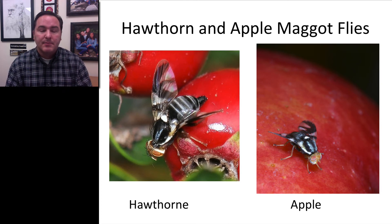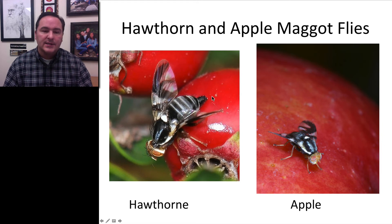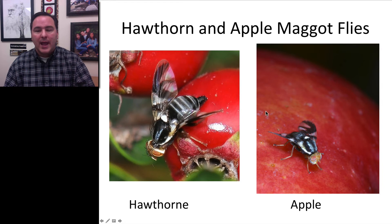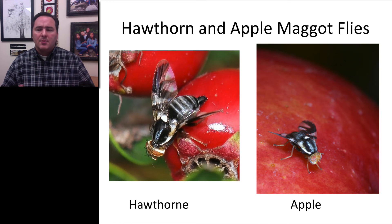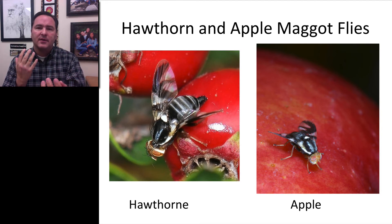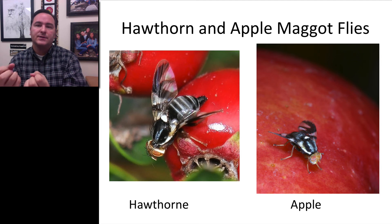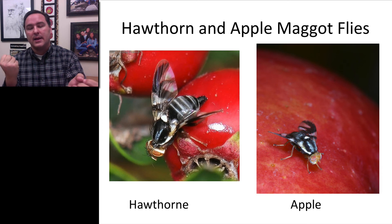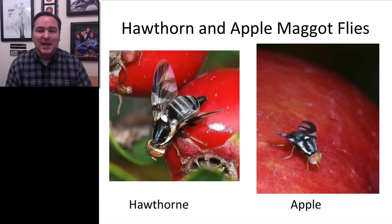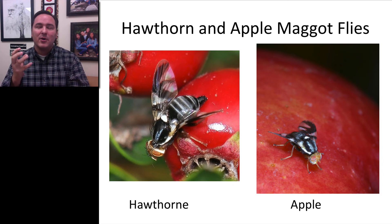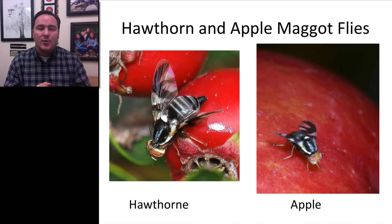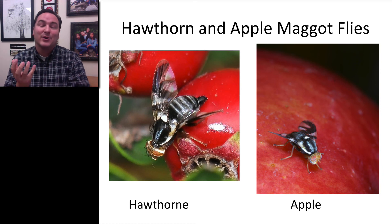An example of sympatric speciation involves the hawthorn and apple maggot flies. Originally in the eastern United States, the hawthorn fly existed and laid its eggs on hawthorn fruits. When apple trees were introduced, the flies began laying eggs on apple trees as well. The two fruits have different maturation times, so flies became disjunct — mostly laying on hawthorn or mostly laying on apple fruits. Natural selection drove the populations to completely separate, with some only reproducing on hawthorn fruits and others only on apple fruits. This real-life speciation was observed after apple trees were introduced in the United States.